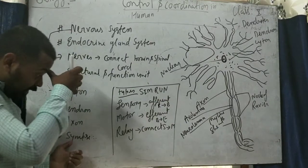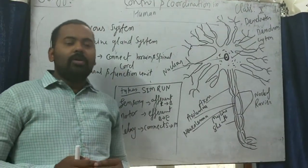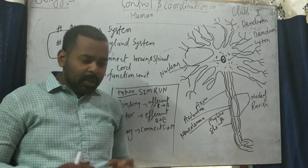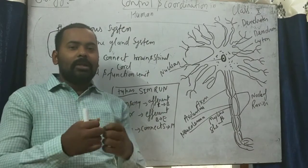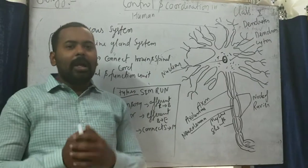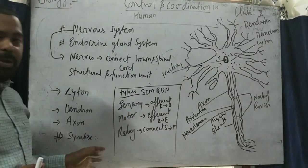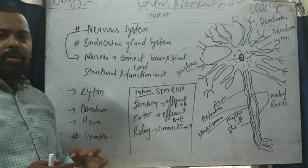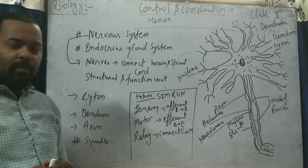Now we need to talk about synapse — it is a very important topic for Class 10 and may appear in your exam. Neuron cells are not completely combined with each other; one neuron is not directly connected to the next. The small gap present between two neuron-ending cells is known as a synapse. It plays an important role in the exchange of impulses inside the body.